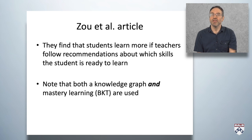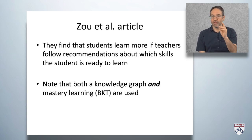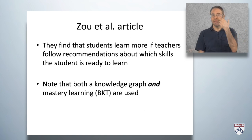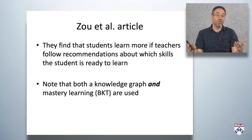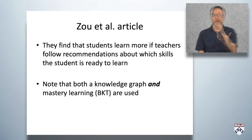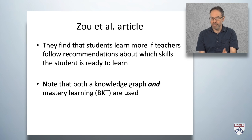In terms of the impacts of knowledge graphs, Zoe and her colleagues found that students learn more if teachers follow the recommendations about which skills the student's ready to learn. In that paper, the learn-to system allowed instructors a choice about whether to assign students content the system thought they were ready to learn or whatever else they wanted — and they found that if teachers followed the recommendations, students did better. Note that in this paper, they used both a knowledge graph and mastery learning, showing these can be compatible approaches.